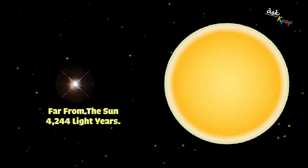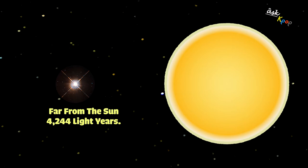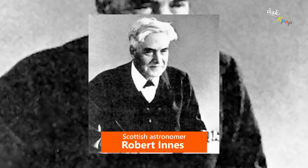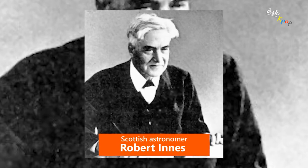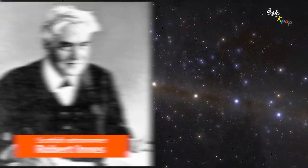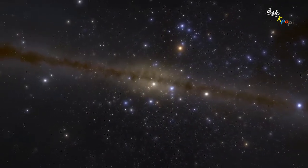Proxima Centauri is a small, low-mass star located 4,244 light-years from our Sun. It is about eight times smaller than our Sun. It was discovered in 1915 by legendary Scottish astronomer Robert Innes and is believed to be the closest star to the Sun.